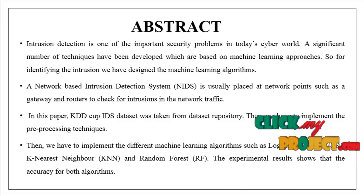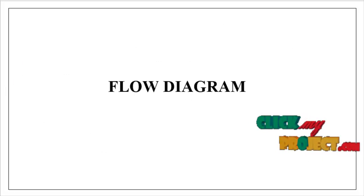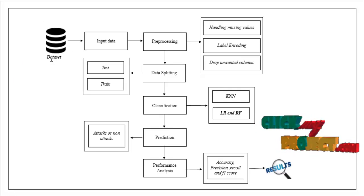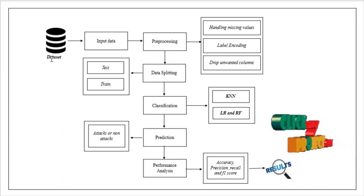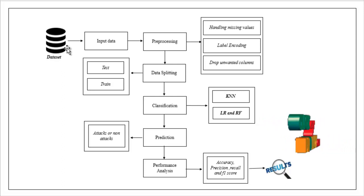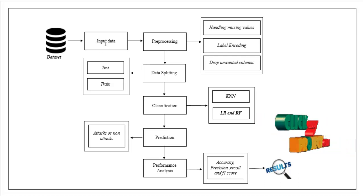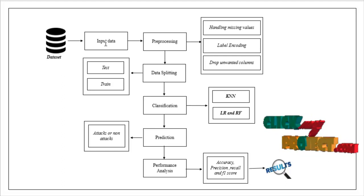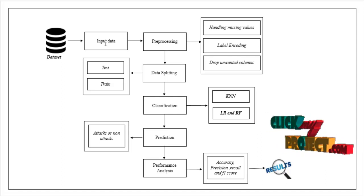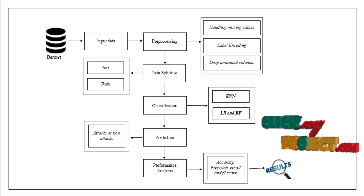Now we are going to see the flow of our process. This is the flow diagram. First, we take the input dataset — the KDD Cup IDS dataset, taken from a dataset repository. After importing the input data, we implement the pre-processing step, where we remove unwanted or unnecessary data and clean the input dataset.